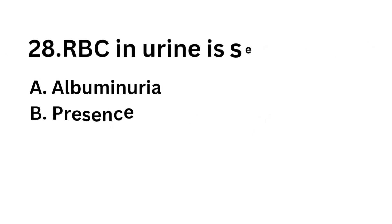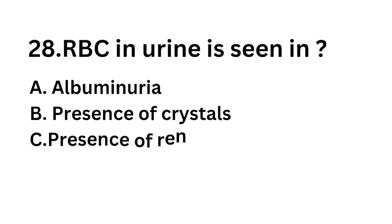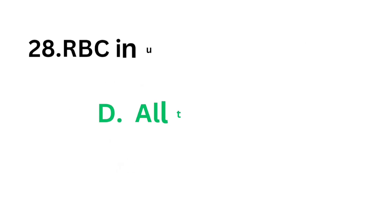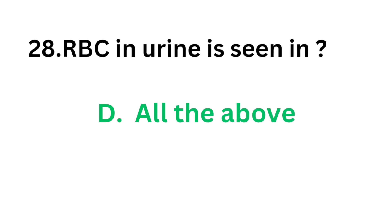Question number 28: RBC in urine (hematuria) is seen in which condition? Option A: Albuminuria. Option B: Presence of crystals. Option C: Presence of renal stone. Option D: All of the above. The correct answer is Option D: All of the above. All of these conditions can show RBC in the urine sample.